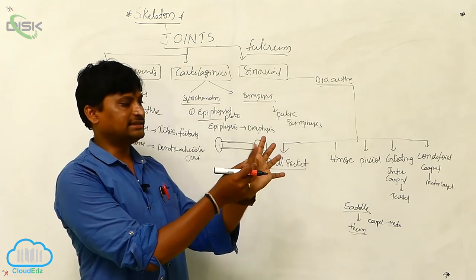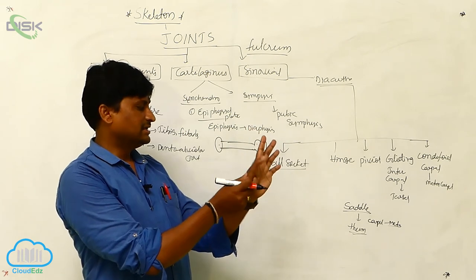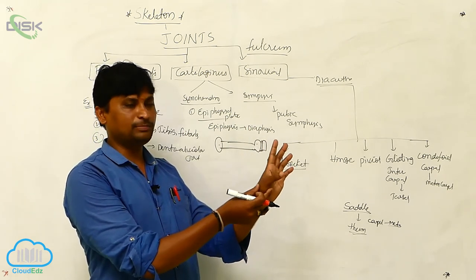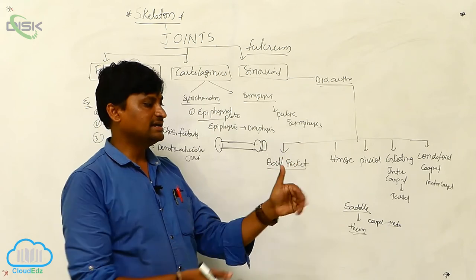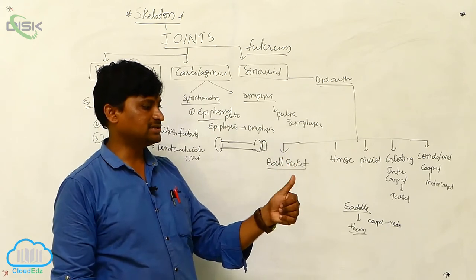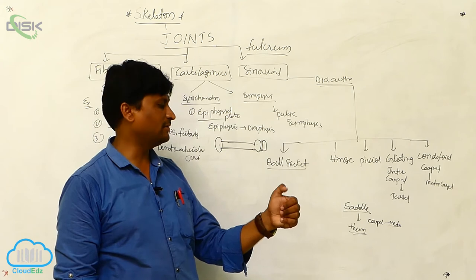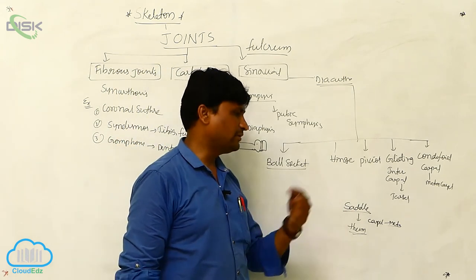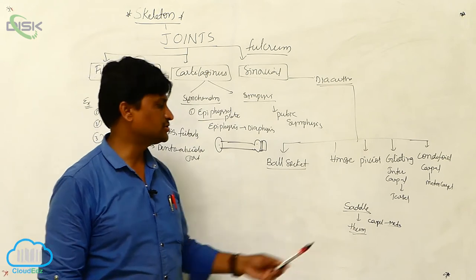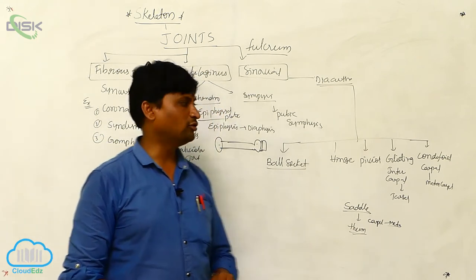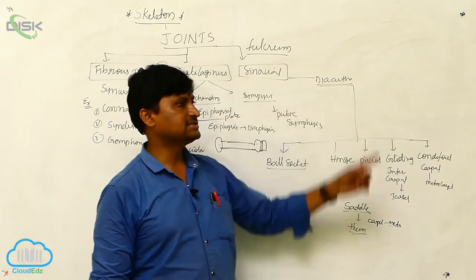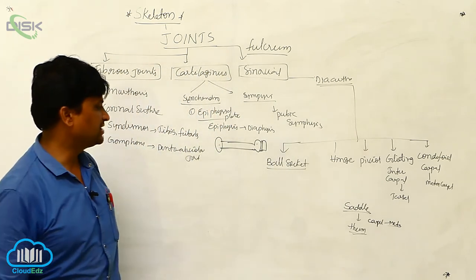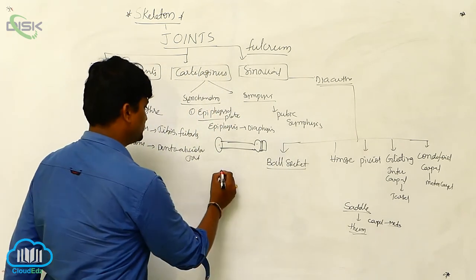The last synovial joint is the saddle joint. The saddle joint is found at the thumb — specifically between the carpal and metacarpal of the thumb. This type of movement is possible using the thumb finger. This type of joint is called a saddle joint. All these joint types are considered synovial joints.